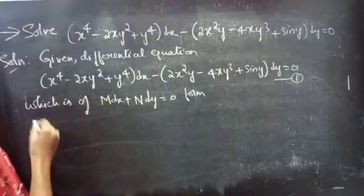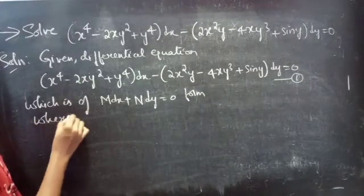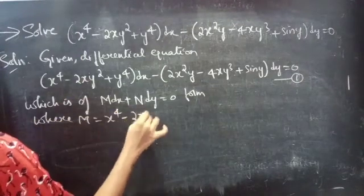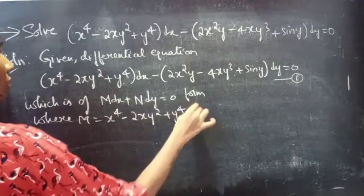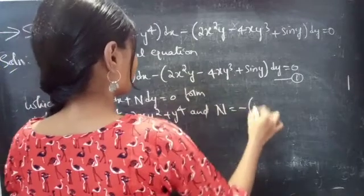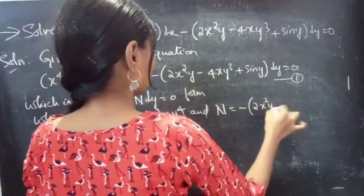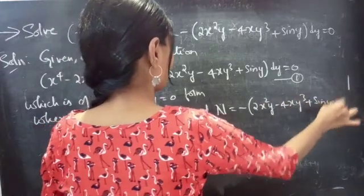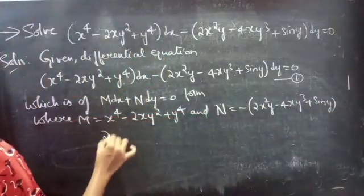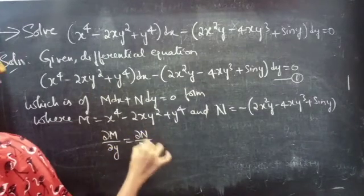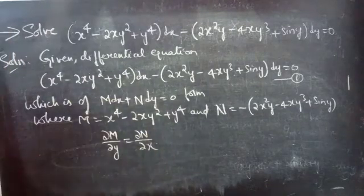By comparing, M equals x⁴ − 2xy² + y⁴, and N equals −(2x²y − 4xy³ + sin y). If the partial derivative of M with respect to y equals the partial derivative of N with respect to x, then we can say that the given differential equation is an exact equation.